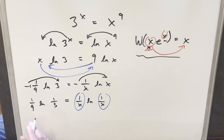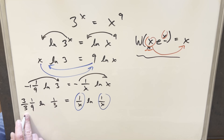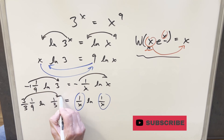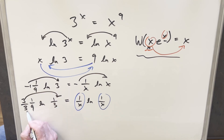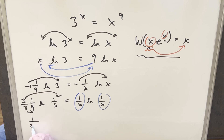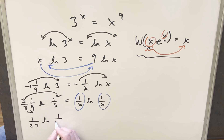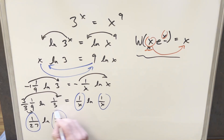On the left side, if I just multiply by 3/3 — which is just multiplying by 1, so I'm not changing anything — I can take that 3 and bring it in as an exponent and multiply the 3 in. So what we have on the outside is (1/27)·ln(1/3)^3, which simplifies to (1/27)·ln(1/27). Now we have the exact same symmetric setup on both the left and right sides.